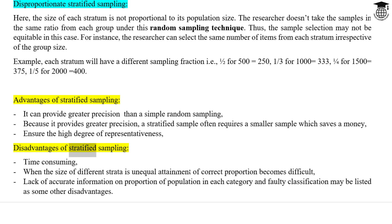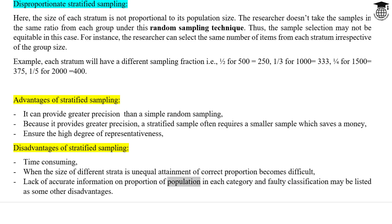Disadvantages of stratified sampling: It is time-consuming. When the size of different strata is unequal, attainment of correct proportion becomes difficult. Lack of accurate information on the proportion of the population in each category, and faulty classification, may also be listed as disadvantages.